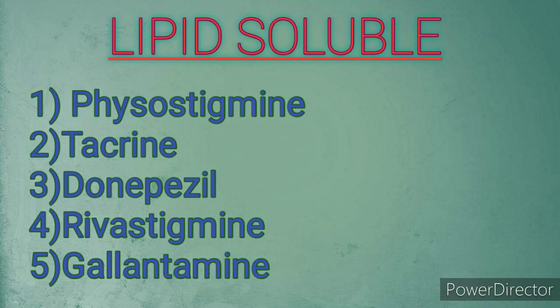Let's start with lipid-soluble drugs. The first drug is physostigmine, which is used in certain poisonings like atropine poisoning and also used as topical eye drops. The second one is tacrine, which was the first drug used for Alzheimer's disease but is now banned due to hepatotoxicity. The next drug is donepezil, which is a long-acting drug. The fourth one is rivastigmine, which is available as transdermal patches. The last one is galantamine, which is a natural product obtained from a plant.